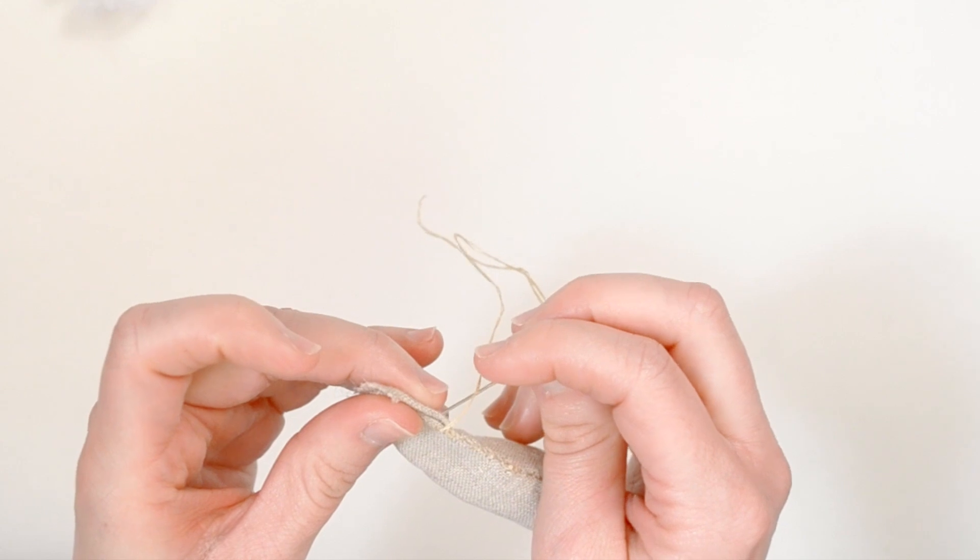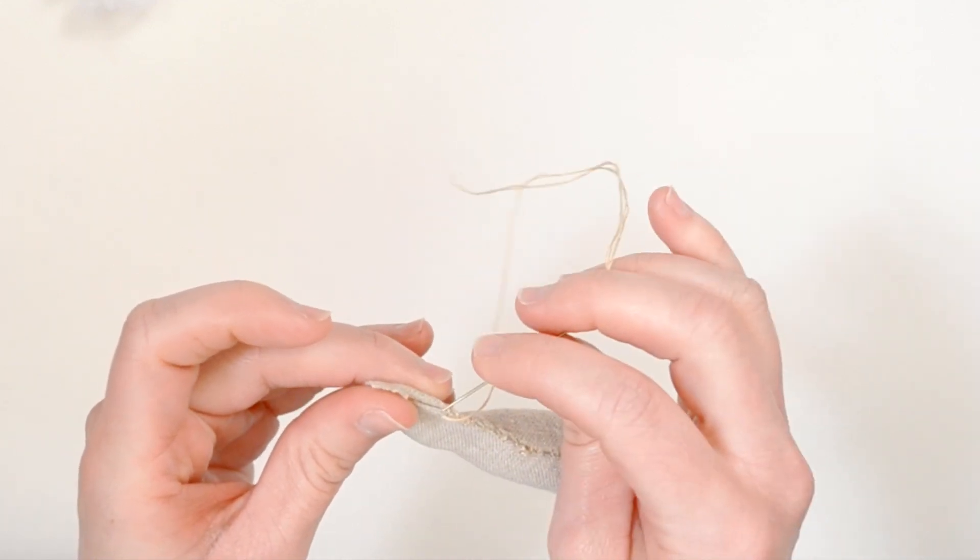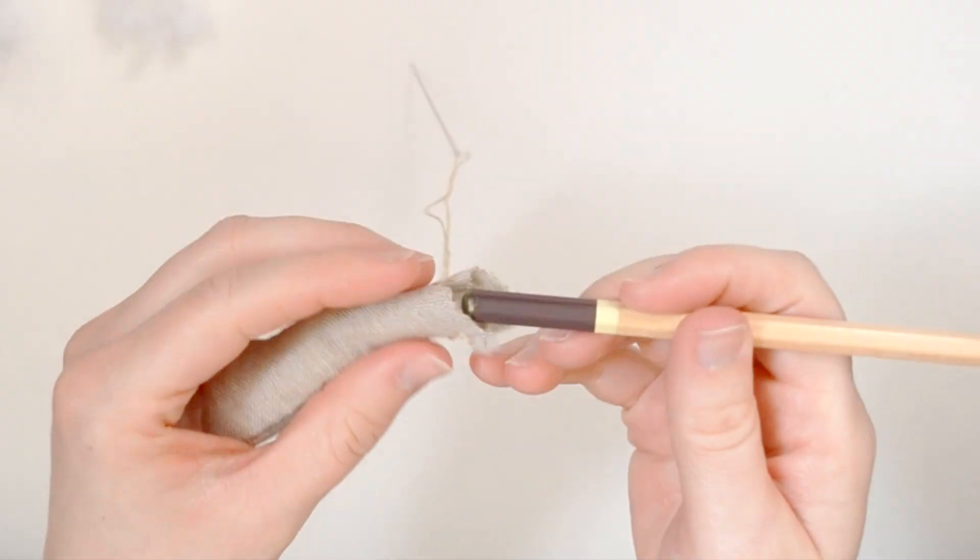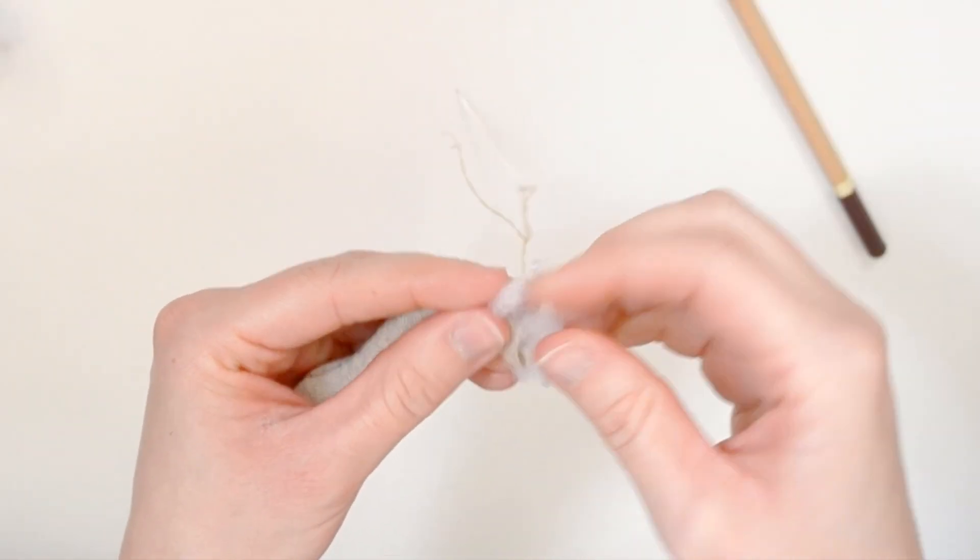Once you've stitched to the top, continue stuffing your entire stem. If you need to, use the end of a pencil or a knitting needle to pack your stuffing in. Now you can set that aside and we'll begin on the mushroom cap.